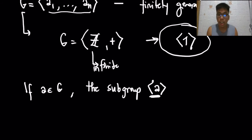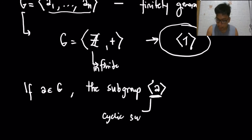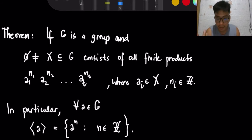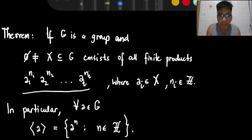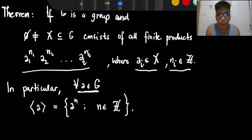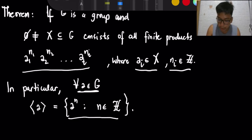If A is an element of G, the subgroup generated by A is what we call the cyclic subgroup, and this cyclic subgroup is generated by A. We will introduce a theorem here as a connection between cyclic subgroups and cyclic groups. Given a group G and a non-empty subset X, this X consists of all finite products of the form where the AIs are elements in X and the N sub-Is are integers. In particular, if A is an element of group G, the subgroup generated by A is of this form.